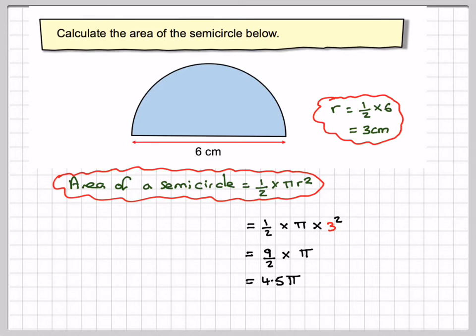4.5 times pi on my calculator will give me 14.137, and then that will give me 14.1 centimeters squared correct to 3 significant figures.